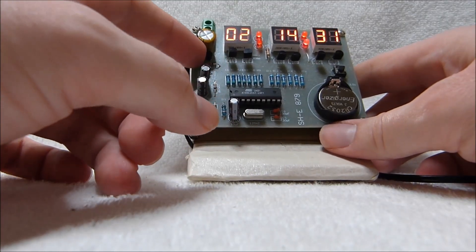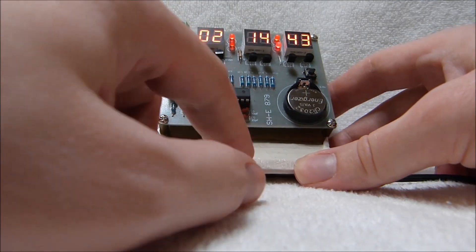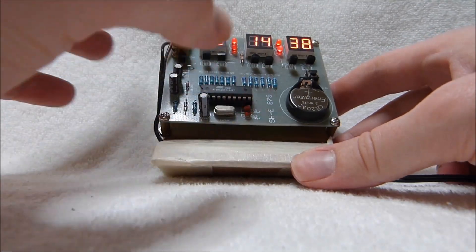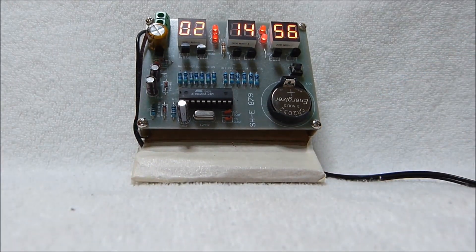Here's a little 78L05 5 volt regulator. This is the clock crystal there. And the rest is just a few resistors, diodes, and capacitors. Well, thanks for watching.